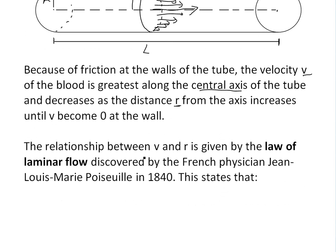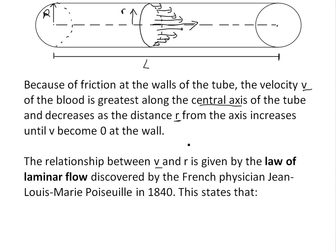The relationship between V, the velocity of the blood, and R, the distance from the axis, is given by the law of laminar flow discovered by French physician Jean-Louis-Marie Poiseuille in 1840. Laminar flow just means smooth flow, not turbulent.